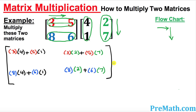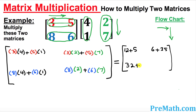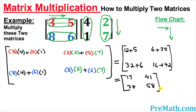We just need to multiply and add those up — simple simplification. So 3 times 4 plus 5 times 1 is 12 plus 5. Then 3 times 2 plus 5 times 7 is 6 plus 35. Then 8 times 4 plus 6 times 1 is 32 plus 6. And finally 8 times 2 plus 6 times 7 is 16 plus 42. Adding them up: 17, 41, 38, and 58. That is our answer matrix, sometimes called the resultant matrix.